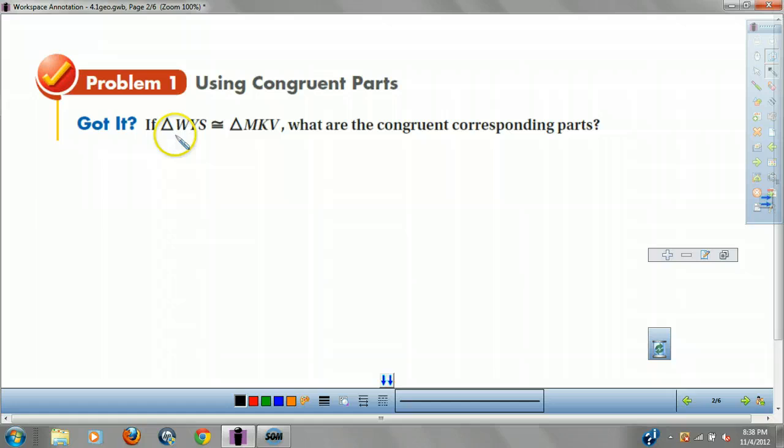Forward and outward. If triangle WYS is congruent to MKV, what are the congruent corresponding parts? I can do this without even drawing it. If W is first, it matches up with M. So I can say angle W congruent to angle M. If Y is second, if K is second, that means those match up. So angle Y congruent to angle K. And lastly, S is last, V is last, so angle S is congruent to angle V.